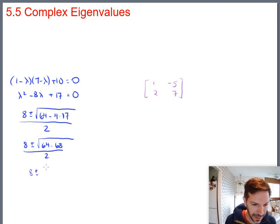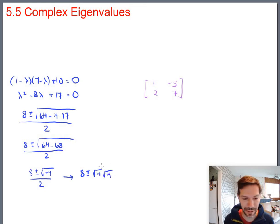8 plus or minus square root of negative 4 all over 2. And if it's been a little while since you've dealt with square roots of negative numbers, the process for handling those is to factor the negative and the number separately. So break it down into square root of negative 1 times square root of 4 all over 2. Then you can handle the square root of the positive number just like you would normally.